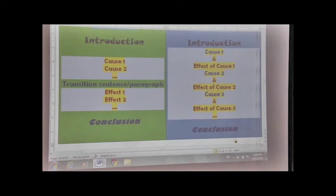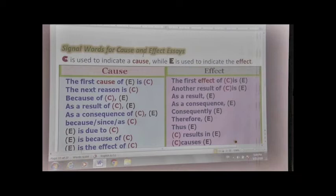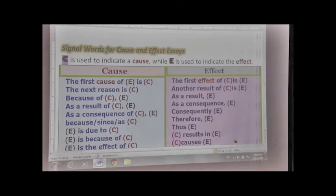Now, what about signal words used in this type of essay? In order to write our cause and effect essay, we need to memorize some transition words and linking words that help us while writing. Signal words like 'because of' are used to indicate a cause, while words like 'as a result' are used to indicate an effect.